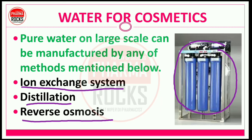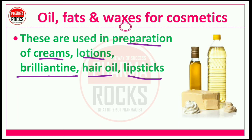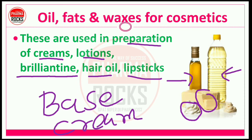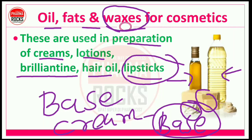Second ingredient: oils, fats, and waxes for cosmetic preparation. These are used in preparations of cream, lotion, brilliantine, hair oils, and lipstick. Their main role is as a base — the main base of any cream is prepared from oils, fats, and waxes. As discussed in previous lectures on lipstick preparation parts 1 and 2, the hardness and structure of a lipstick is mainly determined by wax. This is a key ingredient of any cosmetic preparation.